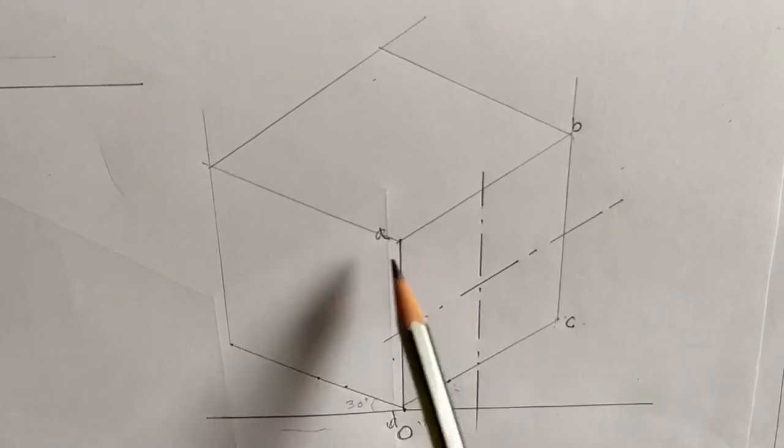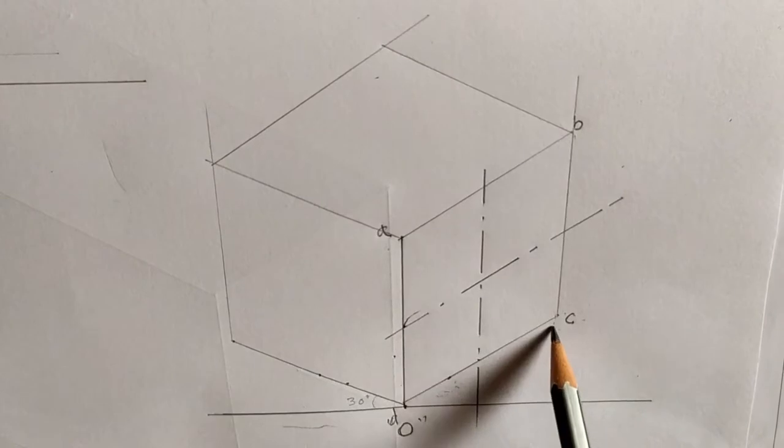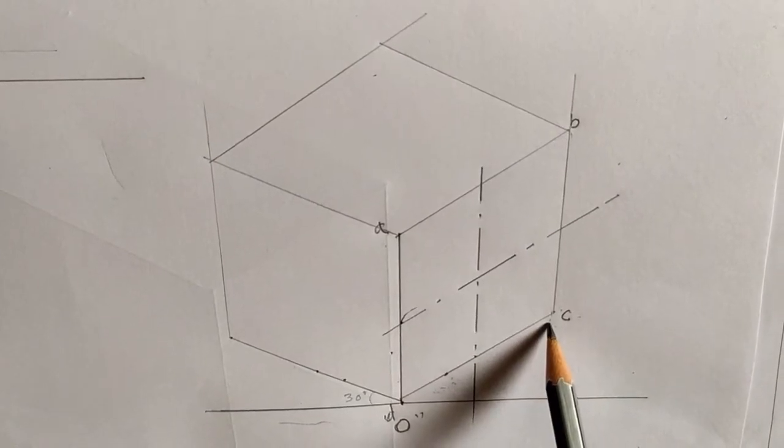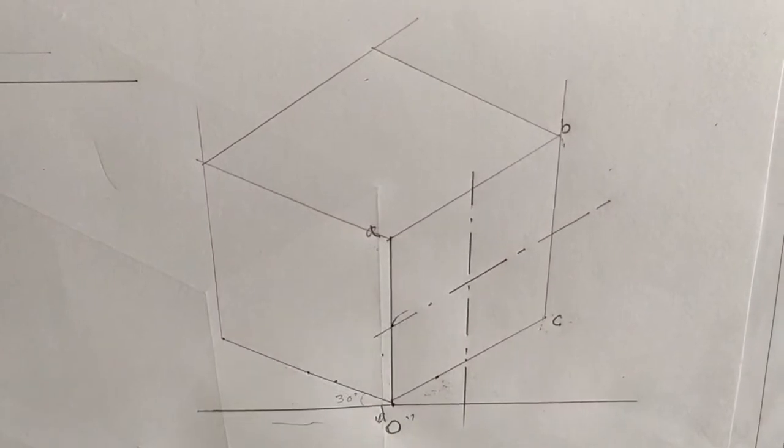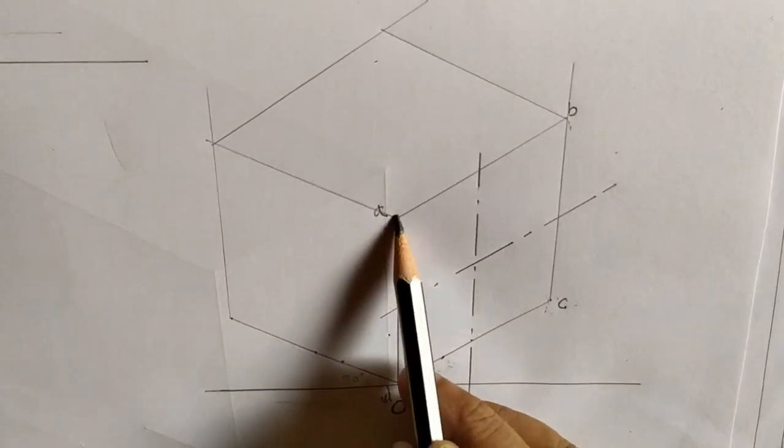Mark the angles. A and C are greater than B and D. So A and C are greater angles.